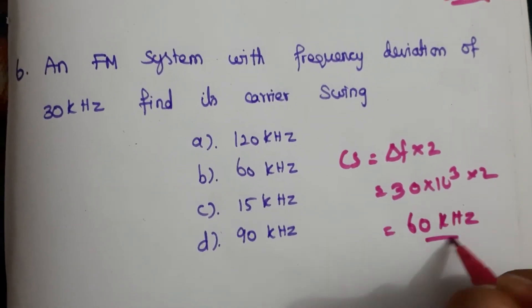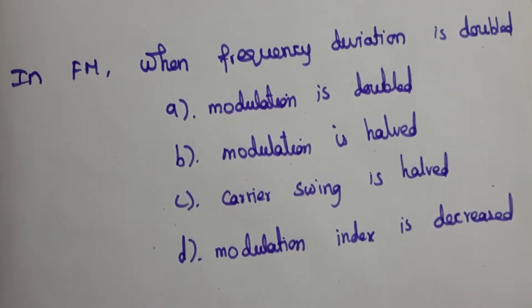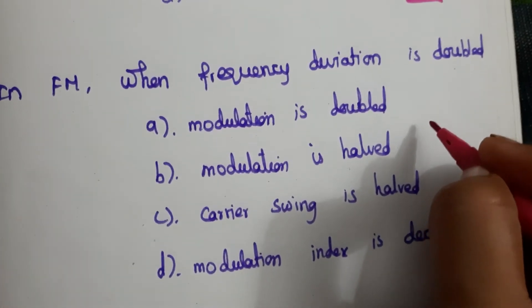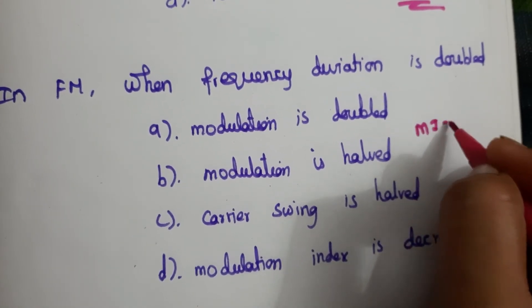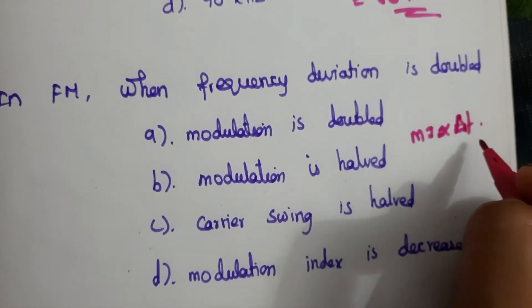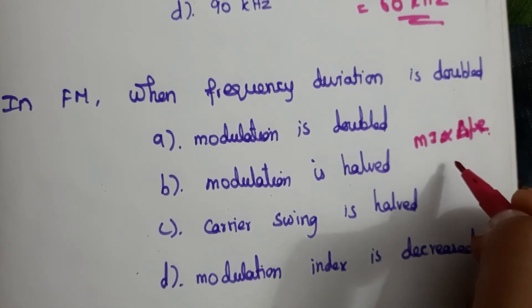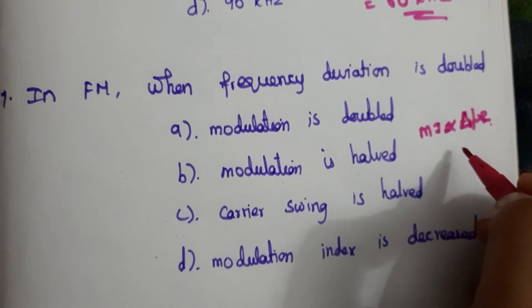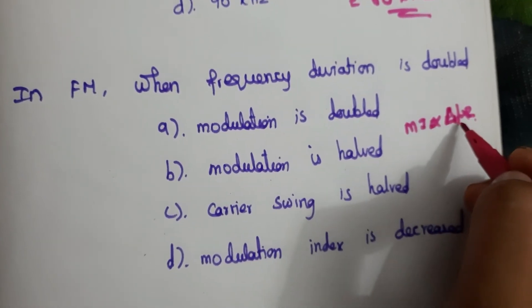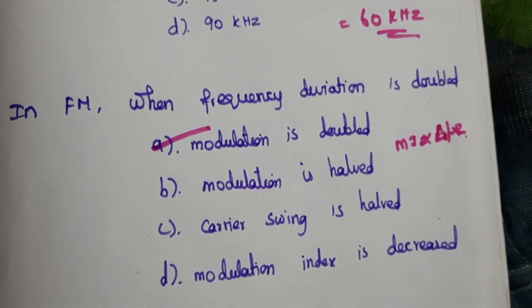Sixth question: The answer is B, 60 kHz. Seventh question: In FM, when frequency deviation is doubled — since modulation index is directly proportional to frequency deviation, doubling the deviation also doubles the modulation index. The answer is A.